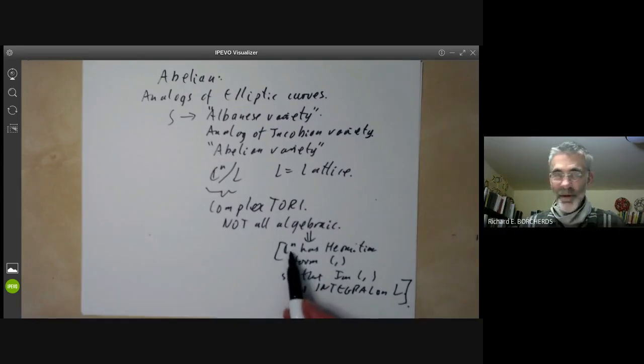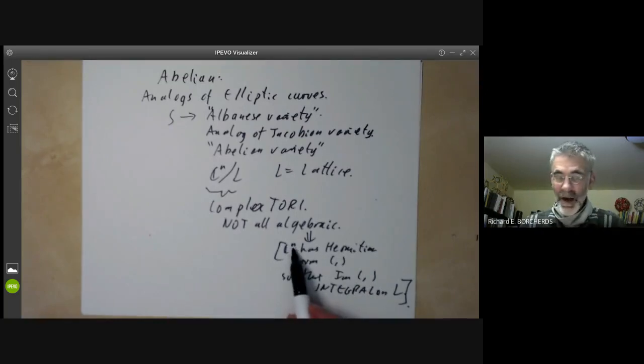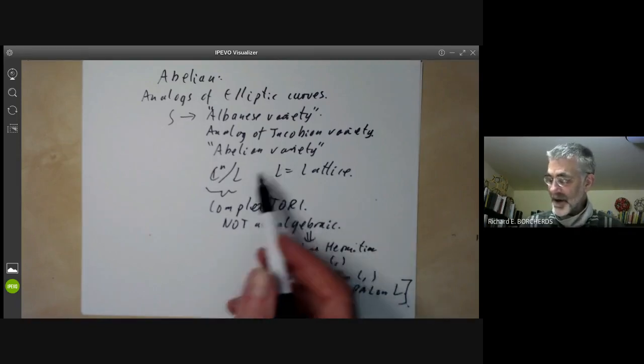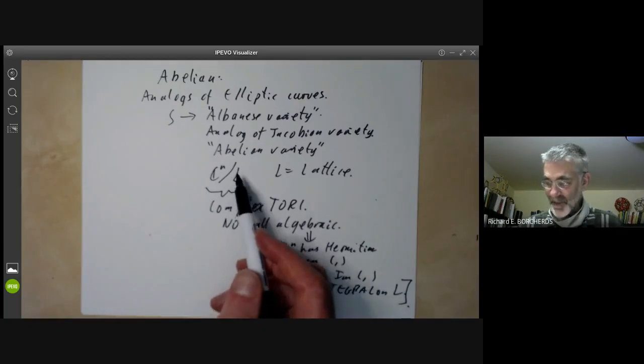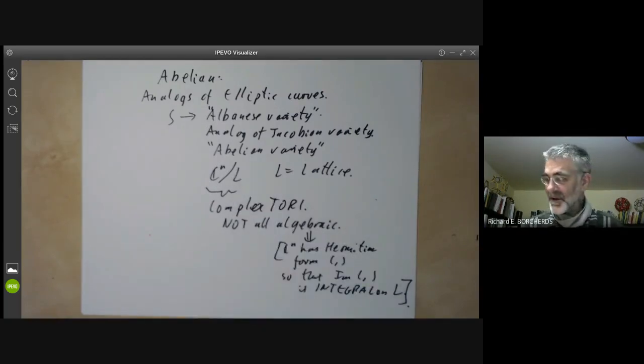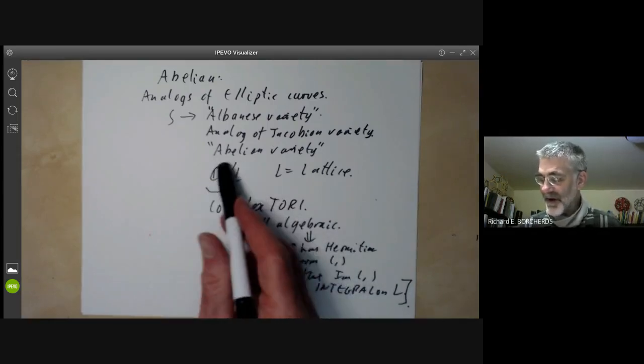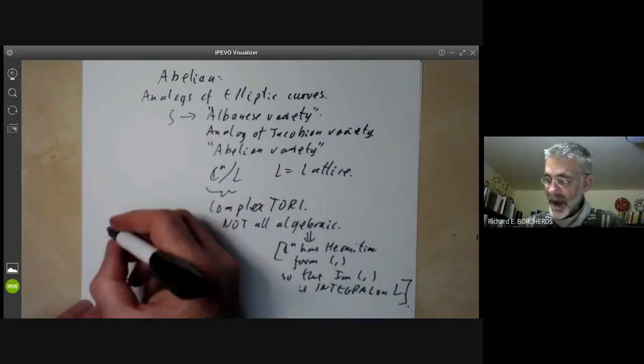There's actually a subtle condition the lattice has to satisfy. In order for it to be algebraic, there has to be a Hermitian form so that the imaginary part of this Hermitian form is integral on the lattice L. Now, if n is one, if you're working in one dimension, it's fairly easy to find a Hermitian form with this property. But if n is greater than or equal to two, then this is no longer true. And there are quite a lot of complex tori that aren't algebraic surfaces.